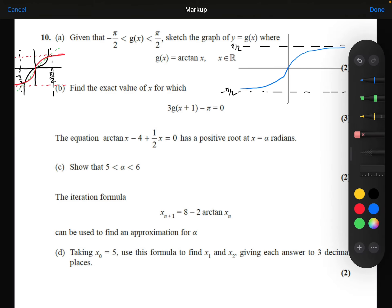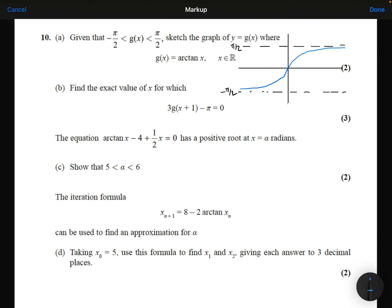Part B. Find the exact value of x for which 3g of x plus 1 equals pi. So first, let's substitute the x plus 1 into the g of x function. So that would give me arctan of x plus 1. We have three of those, so 3 arctan of x plus 1 minus pi equals 0.